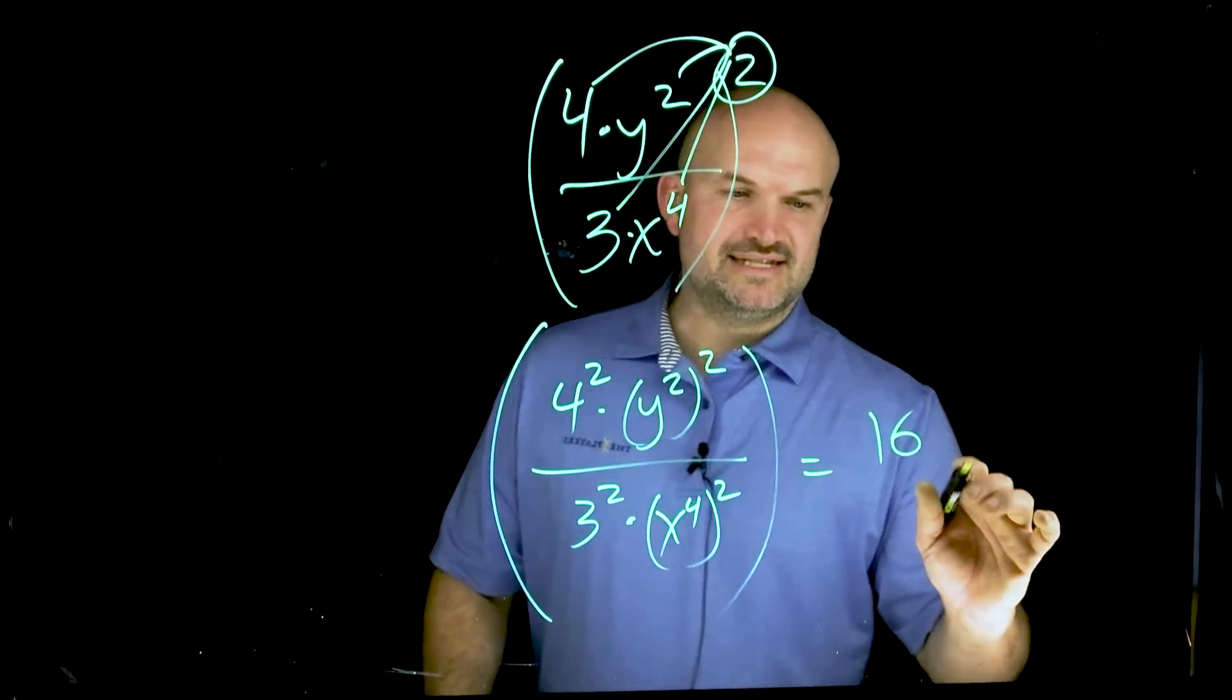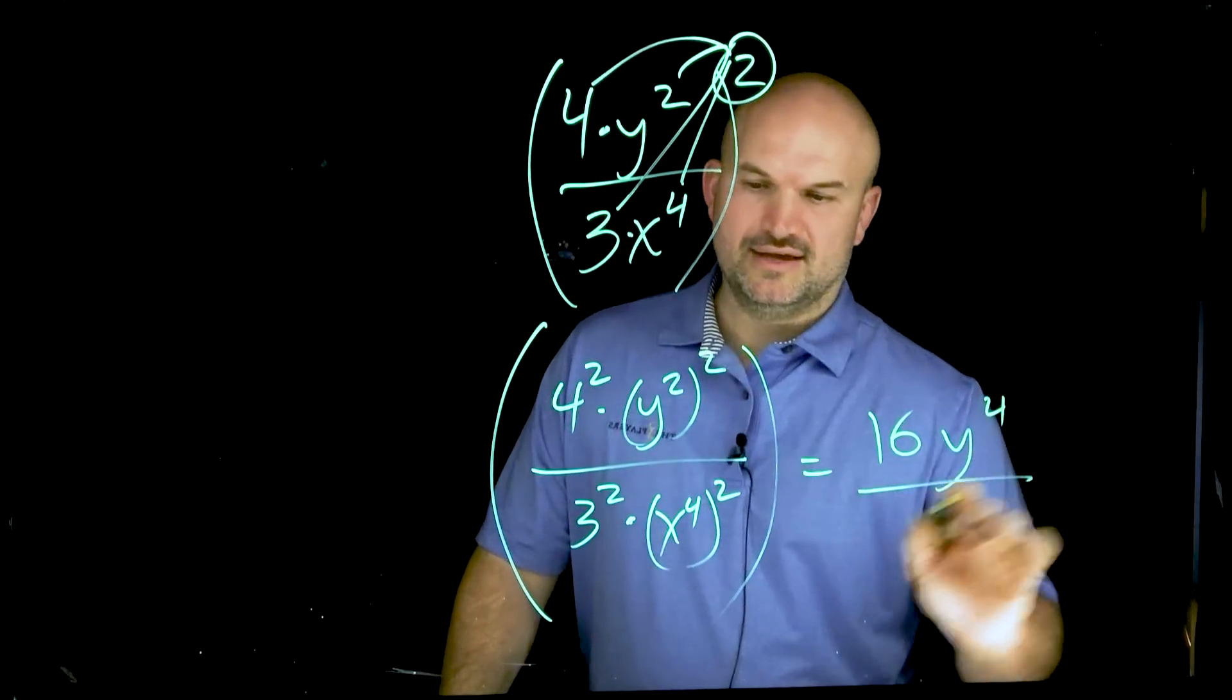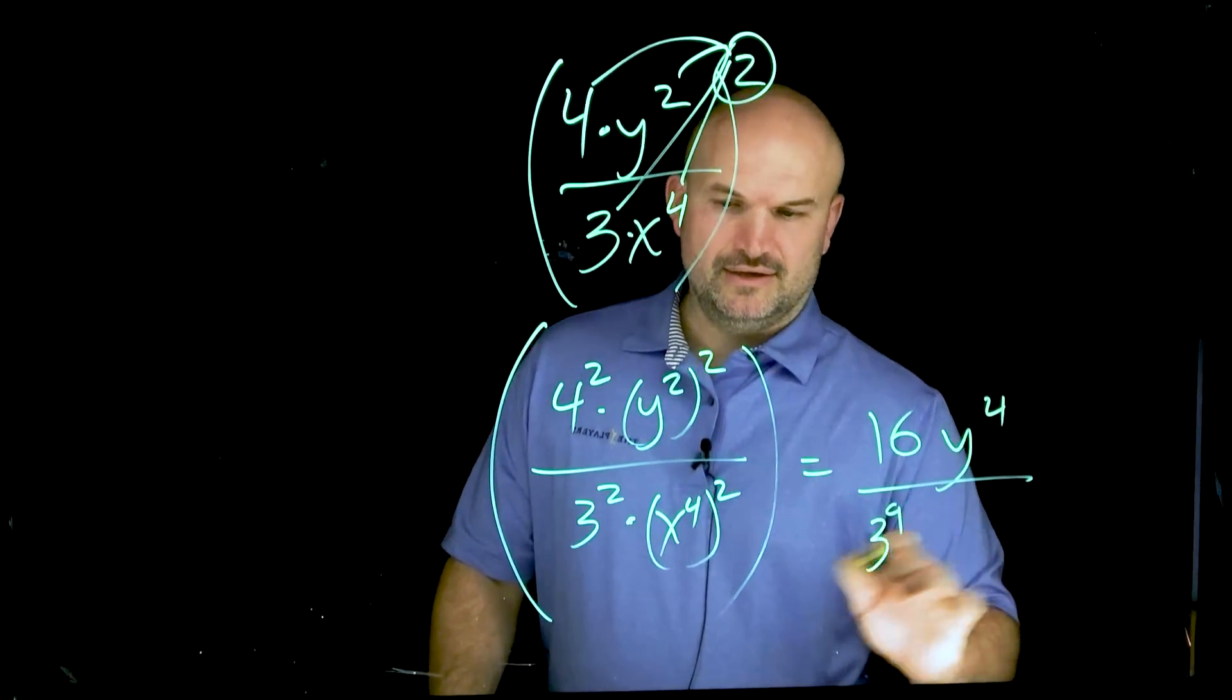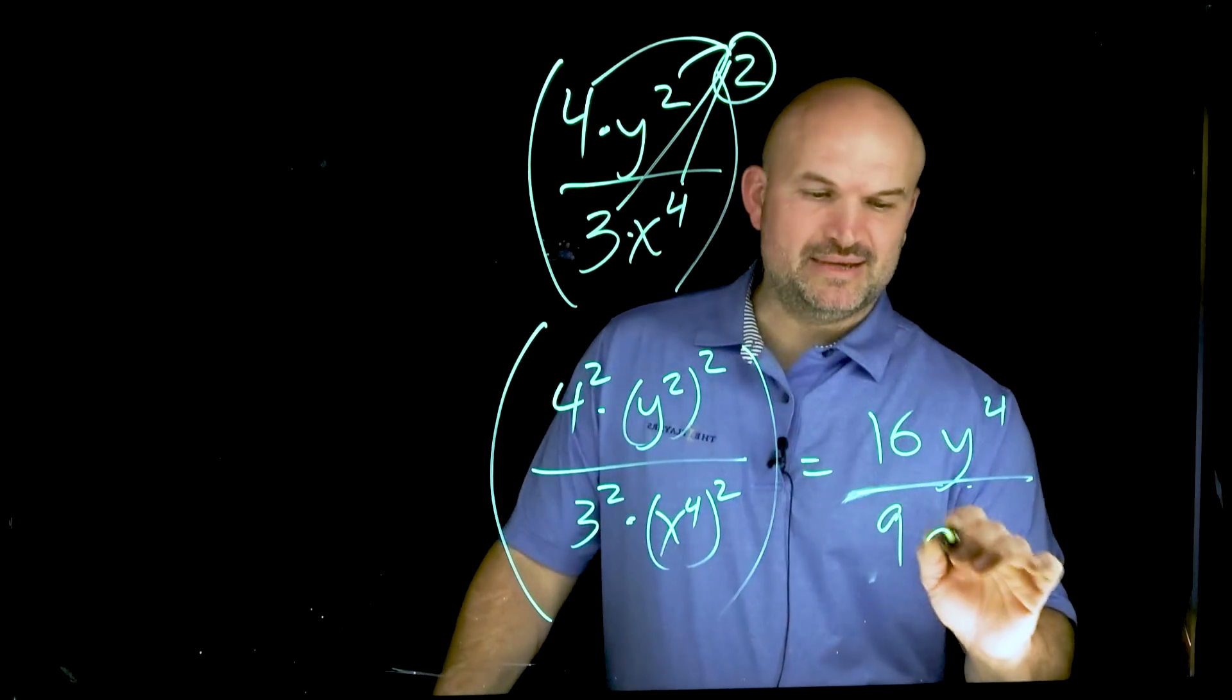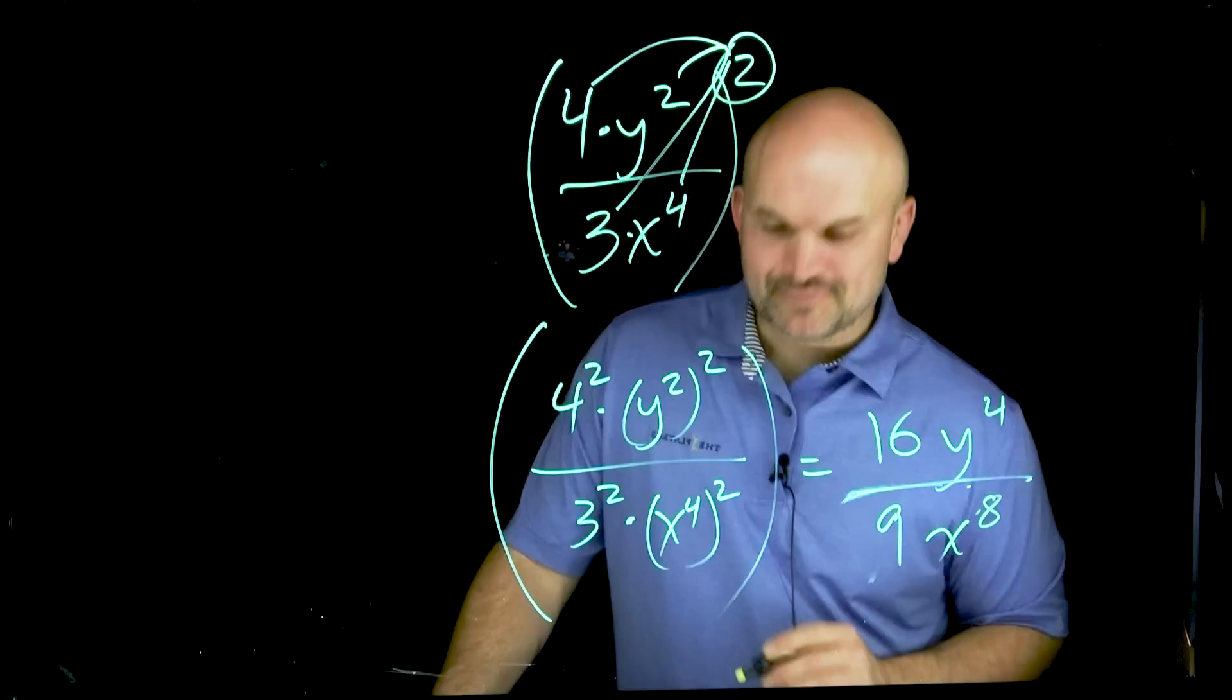So 4 squared is going to give me a 16, y to the 4th, and we have a 3 to the 9. I'm sorry, 3 to the 9th, that's just going to be a 9. And 4 times 2 is going to be an x to the 8th power. Now, the last property, I said there's only 3, but there's actually one more property I want to talk to you about.